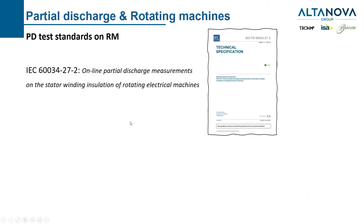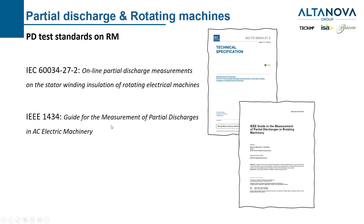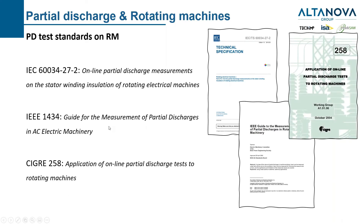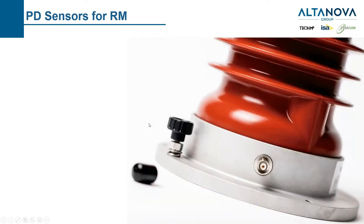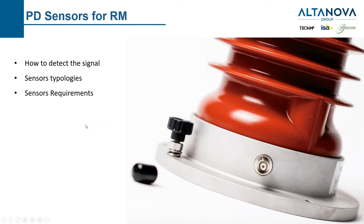In literature we can find some guides and standards for rotating machine testing. We have for example IEC 60034-27 part 2, related to online partial discharge measurement. We have the IEEE 1434, and we also have the CIGRE 25A with application of online PD tests to rotating machines. Now, what can we say about the sensors used to record partial discharge in rotating machines? We will see how we detect the signal, the sensor typologies, the requirements of such sensors, and the positioning of the sensor, signal handling, and safety.